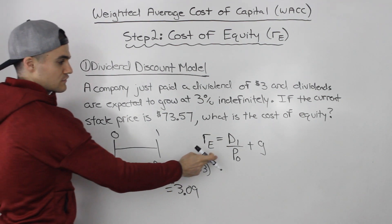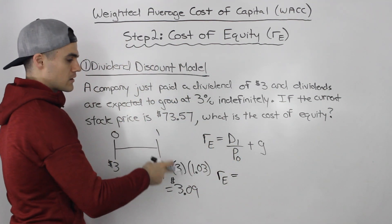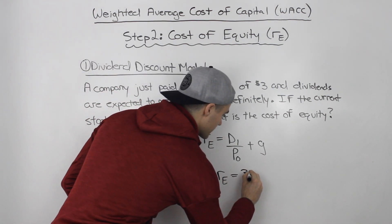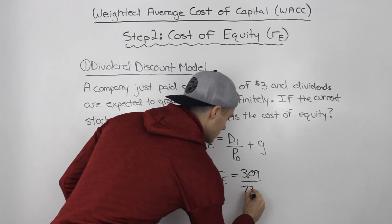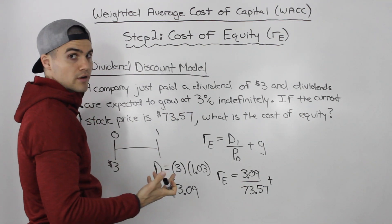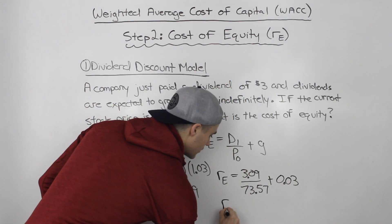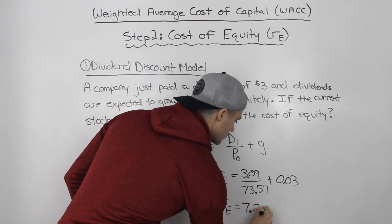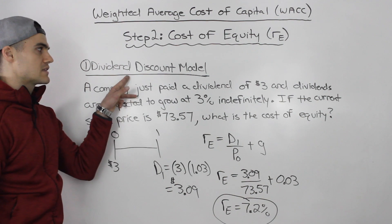Now we can find the cost of equity: RE = $3.09 / $73.57 + 0.03. When you do that calculation, you get 0.072, or 7.2%. That is your cost of equity, found using the dividend discount model.